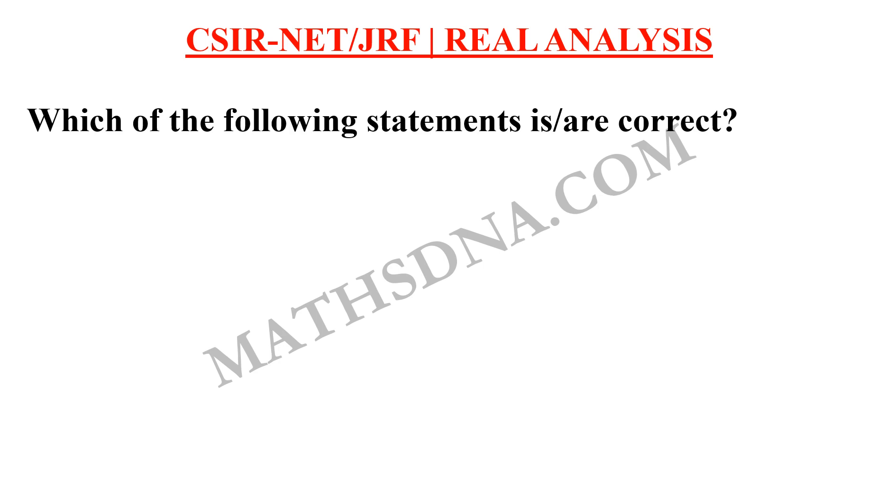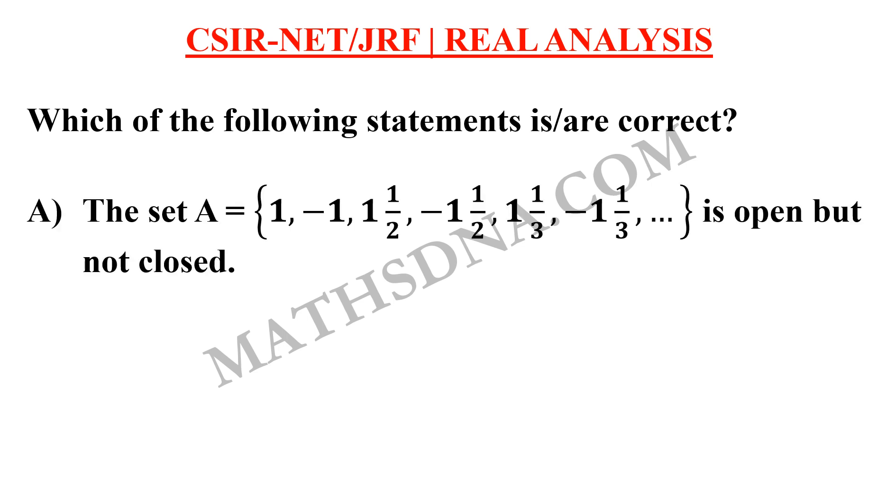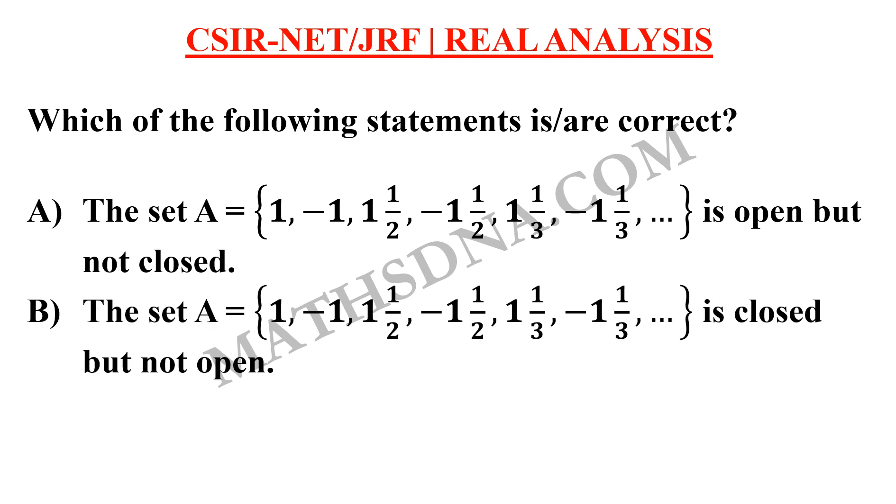Moving on to the question. The question is, which of the following statements is or are correct? Option A: the set {1, -1, 1 1/2, -1 1/2, 1 1/3, -1 1/3, ...} is open but not closed. Option B: the same set is closed but not open. Option C: exactly one of A or B is correct. And Option D: none of them is correct.